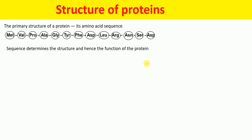Now let's talk in detail about the primary structure of the protein. The primary structure of the protein is its amino acid sequence — as shown here: Met, Val, Proline, Alanine, Glycine, Tyrosine, and so on. This simple sequence of amino acids is the primary structure, and the sequence determines the structure and hence the function of the protein.